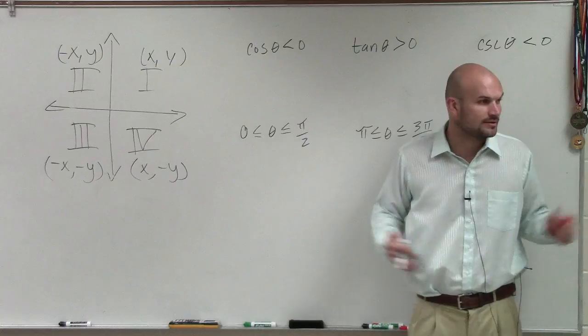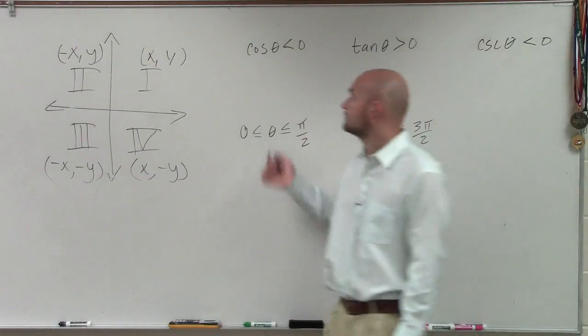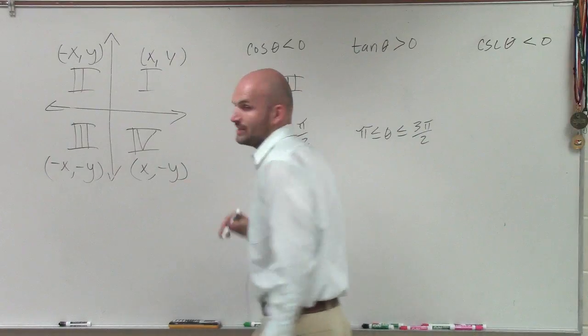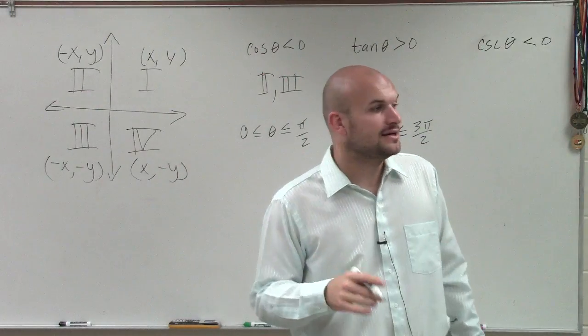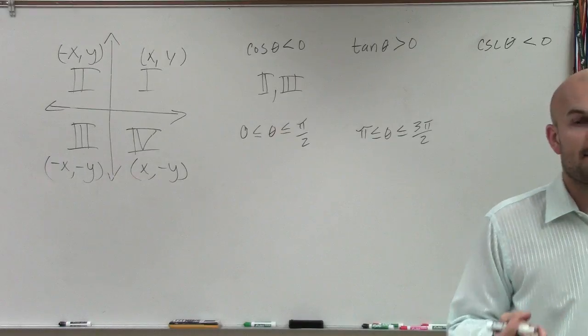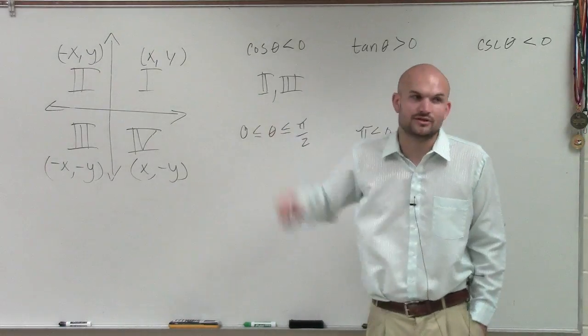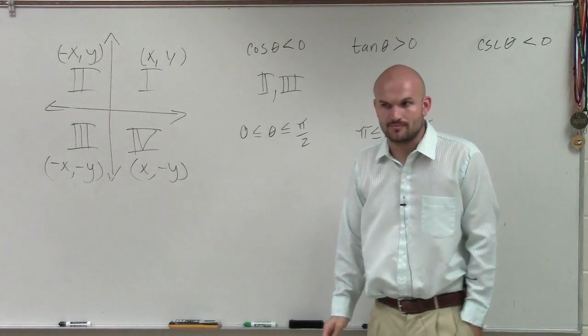Two and three. So if I gave you a problem and I said the constraint is cosine has to be less than zero, that means I only want you to provide an answer where there's an angle either in the second or third quadrant.